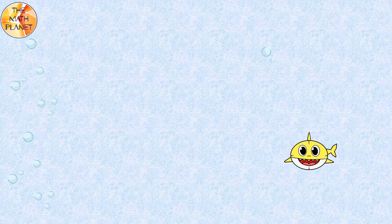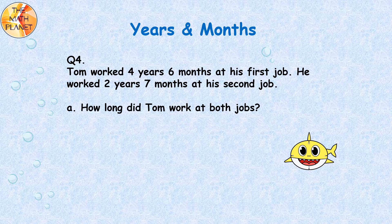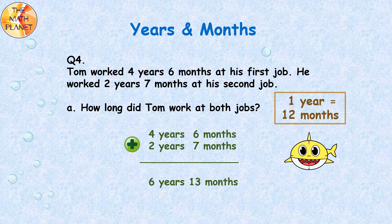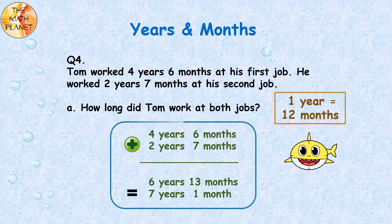Our last word problem involves years and months. Tom worked 4 years 6 months at his first job. He worked 2 years 7 months at his second job. How long did Tom work at both jobs? The addition equation is 4 years 6 months plus 2 years 7 months, and the sum will be 6 years 13 months. Since 1 year equals 12 months and 13 months is greater than 1 year, we regroup 12 months into 1 year. The sum will be 7 years and 1 month. Tom worked a total of 7 years and 1 month at both jobs.